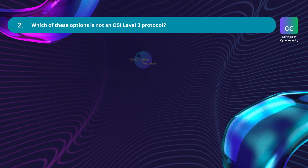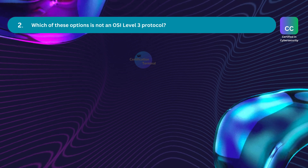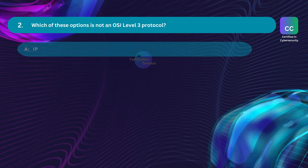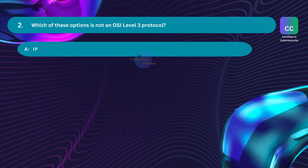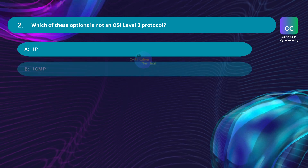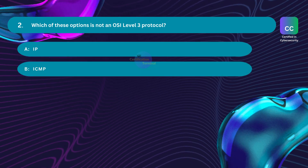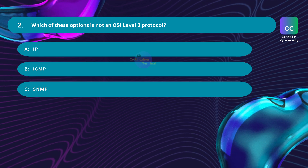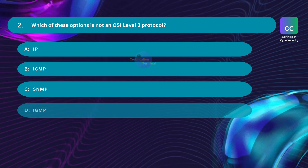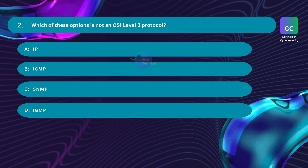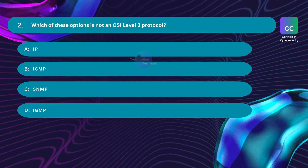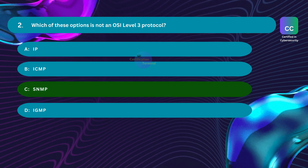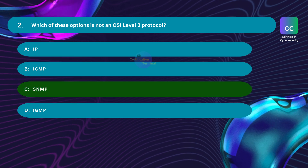Question number two: Which of these options is not an OSI level 3 protocol? Option A: IP. Option B: ICMP. Option C: SNMP. Option D: IGMP. The correct answer is Option C — SNMP.